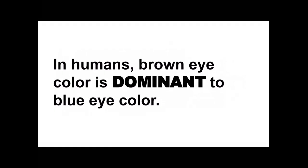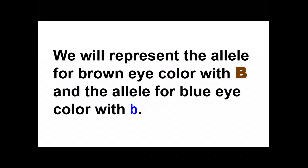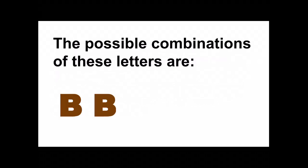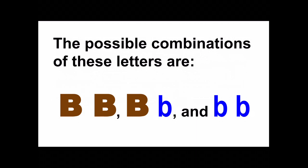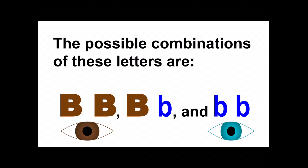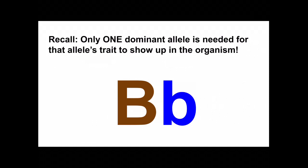Remember, in humans, brown eye color is dominant to blue eye color. So we represent the brown-eye allele with a capital B and the blue-eye allele with a lowercase b. Our possible combinations are BB, Bb, and bb. BB gives us brown eyes, bb gives us blue eyes, and Bb — well, remember, only one dominant allele is needed for that trait to show up. So because we have a big B, the little b gets canceled out, and the organism has brown eyes.